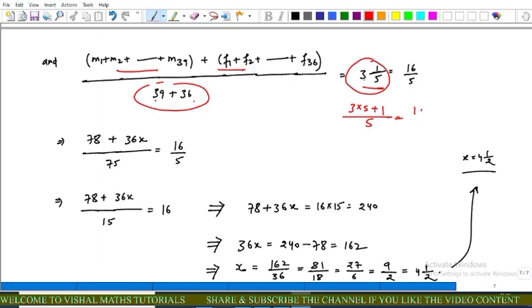This equals 16/5. Now this term equals 78 and this term equals 36x upon 75, which equals 16/5 as it is.